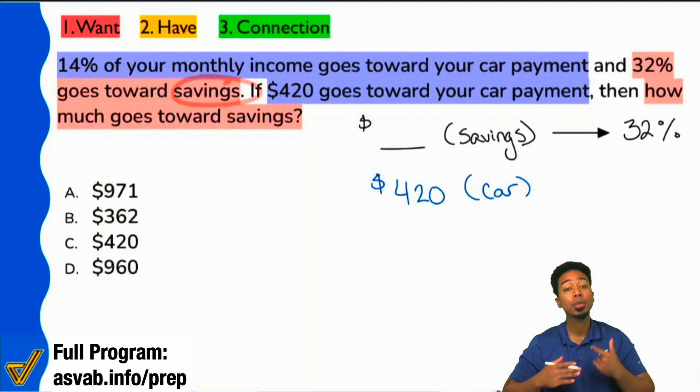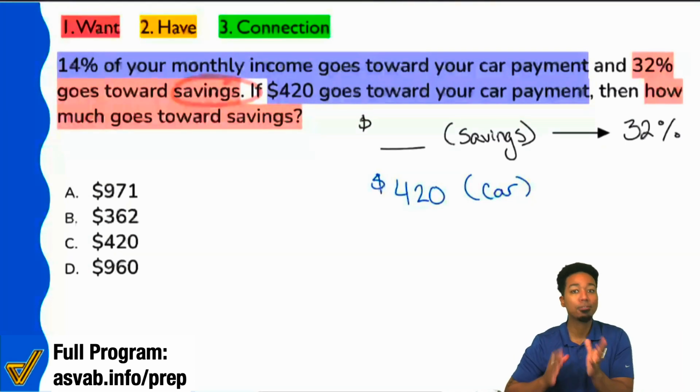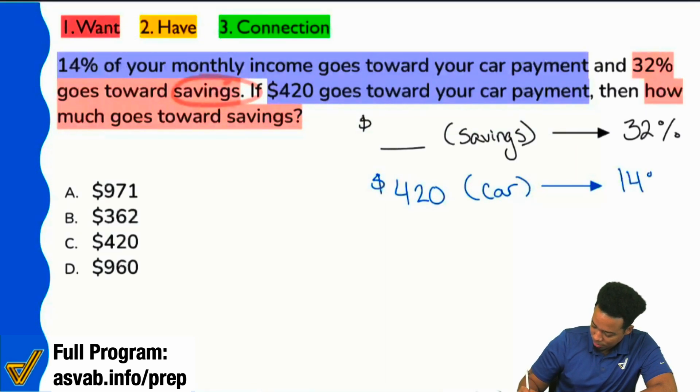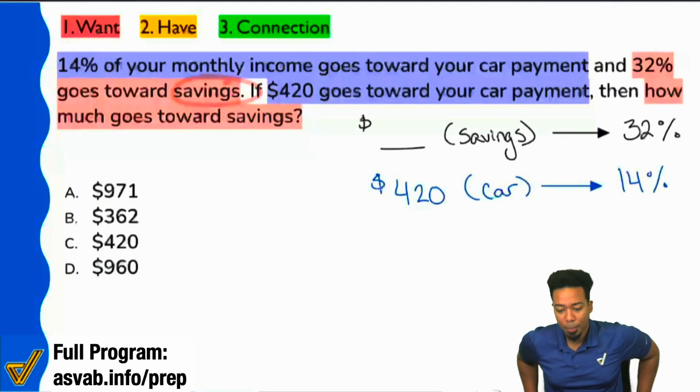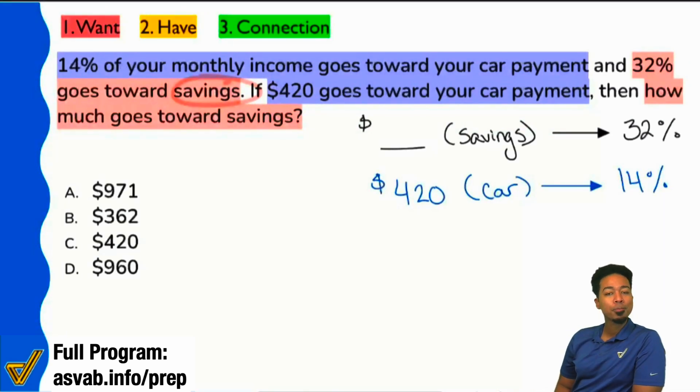They outline it for you. Your job is to practice your reading skills to the point where being under pressure of being under a timer, that doesn't affect how well you can pick information up. 14%, so here we are. This right here, 14%. So here we are. Everybody, do we see our setup here?